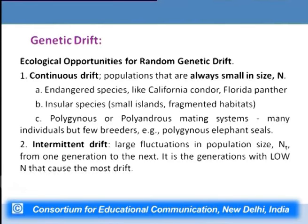The second mechanism is intermittent drift, wherein there are large fluctuations in population size from one generation to the next, and it is the generation with low population numbers that causes the most drift. When population size crashes, the alleles present in those surviving individuals may get fixed in the population and be carried to future generations. This is intermittent drift.